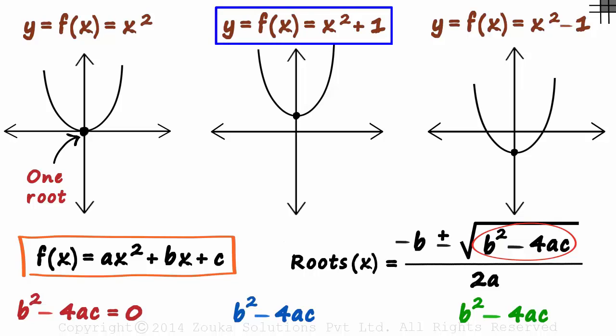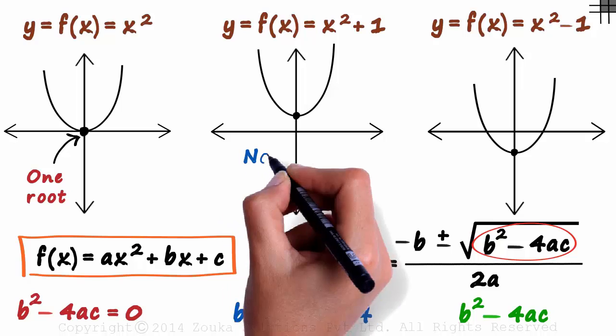Let's move on to the second function. b is zero and a and c are one each. This will equal minus four. Negative value of this means no roots. Does the graph also say the same? At what value of x is the function equal to zero? Look closely. There is no such value of x at which the function is zero. It has no roots.